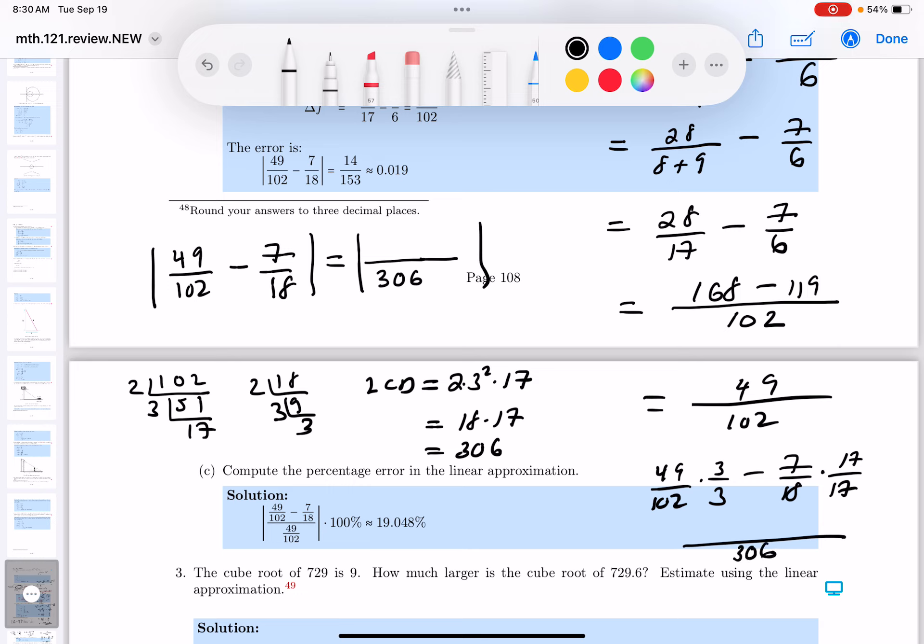But I got to do that numerator part. 3 times 49, 147. And 7 times 17, that's 70 and 49, so 119. What do you get there? 21, 28. I'm going to reduce that. 14. And that's going to give you 153. You don't have to do the dash one, by the way. All right. Thank you.